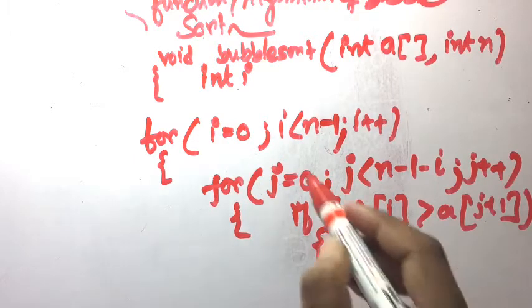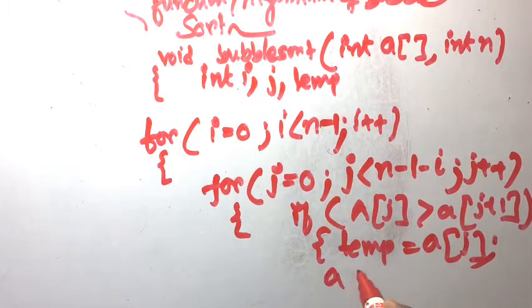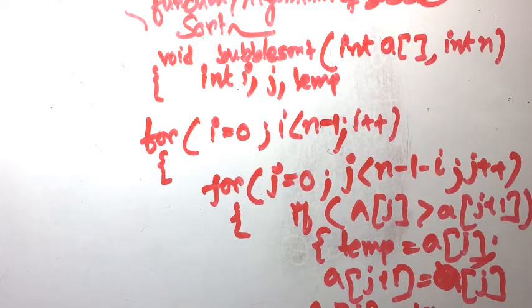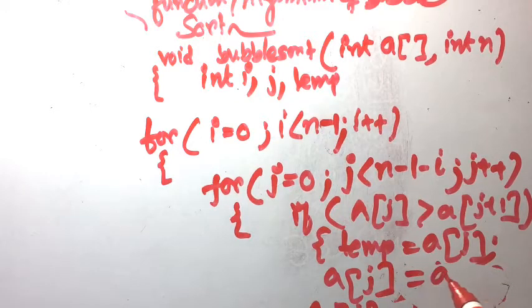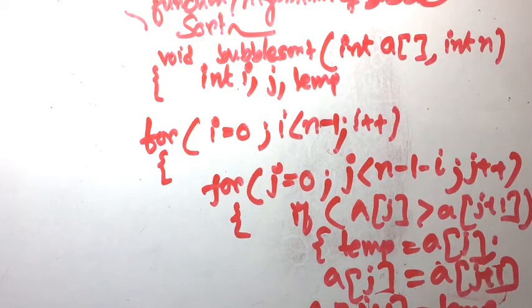Now checking: if a[j] is greater than a[j+1], then perform a swap using a temp variable. temp equals a[j], then a[j] equals a[j+1], then a[j+1] equals temp. So the swapping is: temp equals a[j], a[j] equals a[j+1], a[j+1] equals temp — this is the classic swap: a equals b, b equals temp concept.